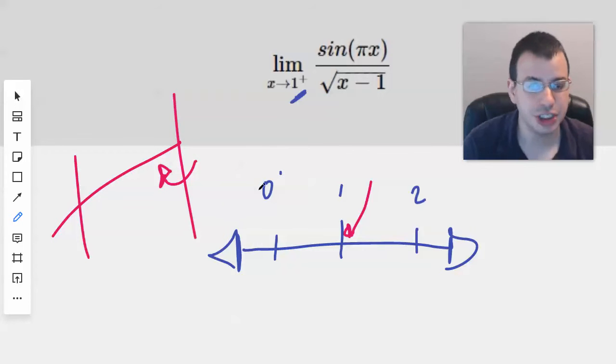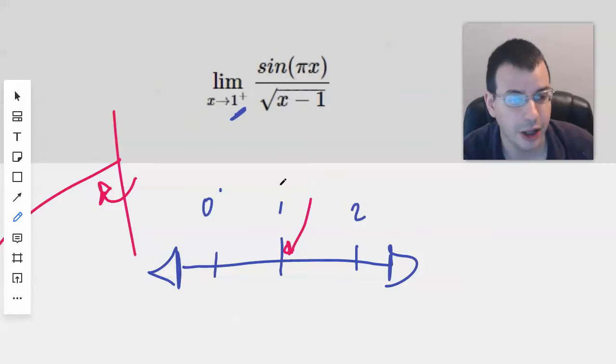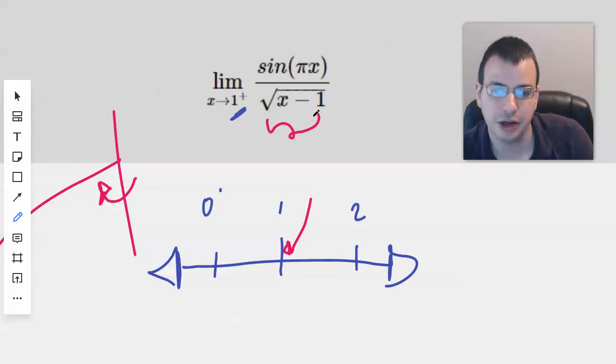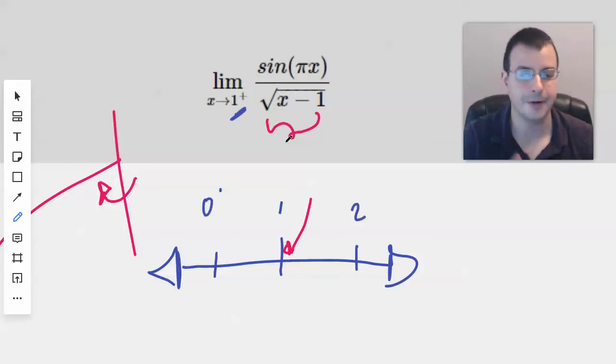And so for this problem, the reason that is done is because if you look right here, you have x minus 1 square rooted in the denominator. And so you have to take square roots of positive numbers, at least to have real numbers, real solutions. And so we need x to be slightly bigger than 1 just so that the universe doesn't explode.